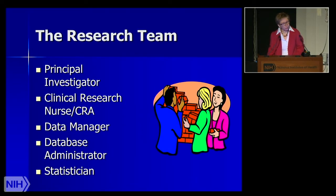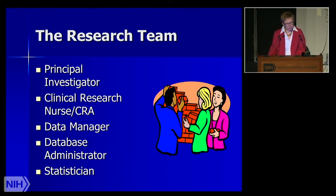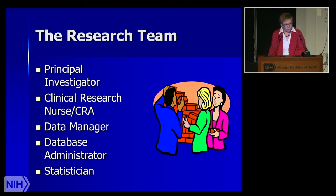The research team plays a really vital role in this process. The team can be made up of the principal investigator, clinical research nurse or CRA, the data manager, database administrator, and statistician. However, other people can play a role as well depending on the type of study — you may also need to include radiation oncologists, nutritionists, or caseworkers, depending on your study.